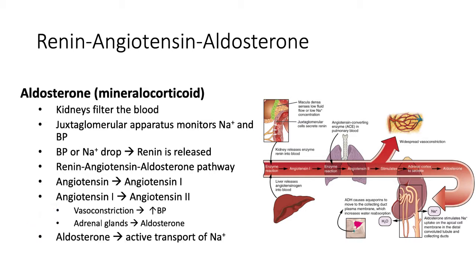Aldosterone acts on the kidneys to change the permeability of the kidney tubule to sodium. It causes the kidney to actively retain sodium. This, in turn, due to osmosis, will allow water to be retained as well. These two mechanisms will raise the sodium content of the blood as well as raise the blood volume due to the retention of water. Therefore, this entire loop, which involves the adrenal glands, the liver, the lungs, and two different parts of the kidneys, is a negative feedback mechanism.